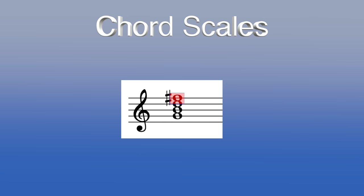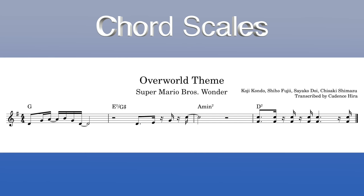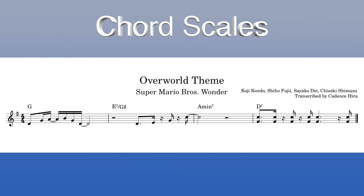The main purpose of a chord scale is to know which notes sound the best played at the same time as the chord, as well as which jazzier notes you can stack on top. Most chords consist of four notes: the root, third, fifth, and seventh. Often, chords omit that top note, leaving just the root, third, and fifth. Most scales consist of seven distinct notes, moving up in sequence before arriving back at the higher version of the root. Our chord progression in the Mario Wonder theme is G major, E7, A minor 7, and D7, and our song is in the key of G major.